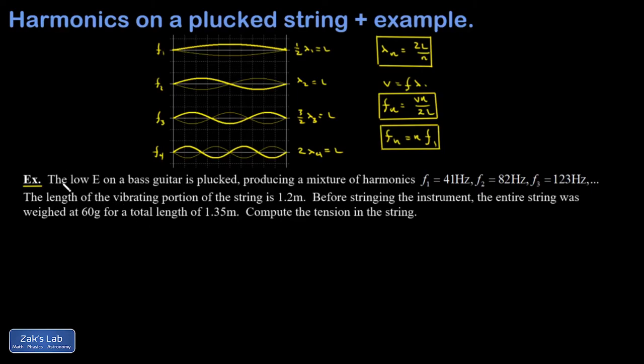What happens on a plucked string is that you start out with infinitely many different frequencies all superimposed on the string. But these special resonant frequencies, these are the survivors because their reflections interfere constructively with each other. So these are the vibrations that live a very long time on a plucked string. And when you pluck a string, the tone is going to be dominated by the fundamental. And then as you go to higher and higher overtones, their amplitudes decrease.